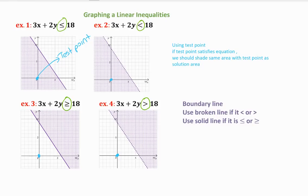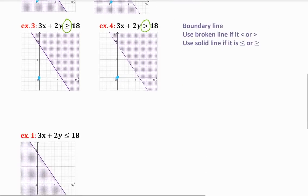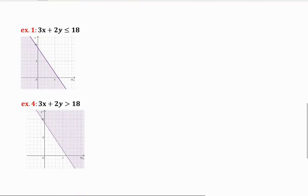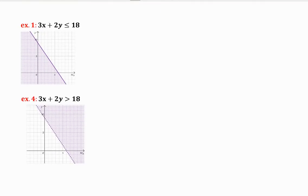But the third and fourth examples are different because they don't satisfy the (0,0) point. So let me show you with details what I'm talking about. I took the same example, example one from above. It says 3x plus 2y less than or equal to 18.